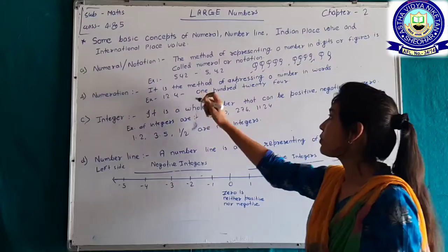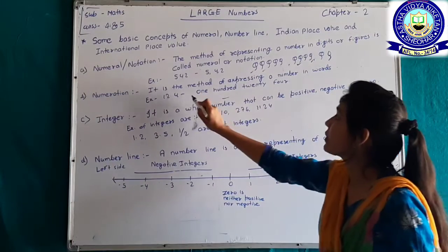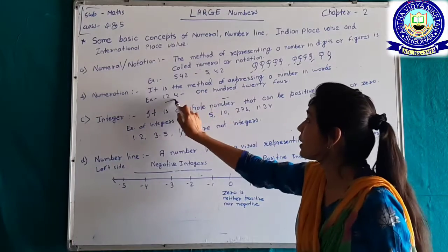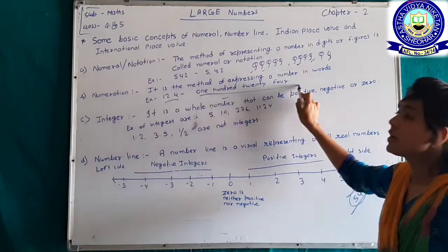For example, 124 — when we write this number in words, it is called our numeration.